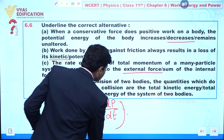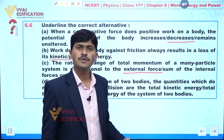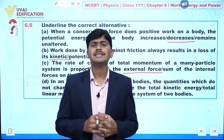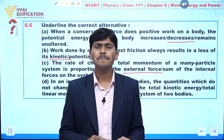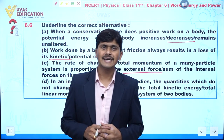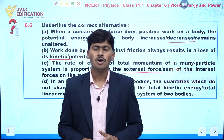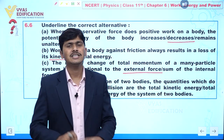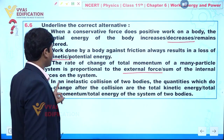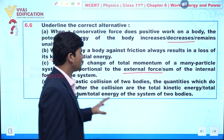Now, part number D: in an inelastic collision of two bodies. In an inelastic collision, total linear momentum and total energy of the system remain constant, but kinetic energy does not remain the same — initial kinetic energy is not equal to final kinetic energy. The question asks: the quantities which do not change after the collision are?